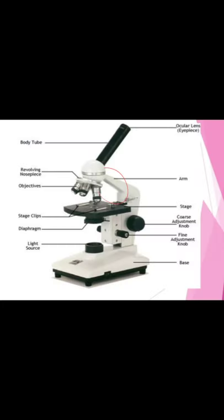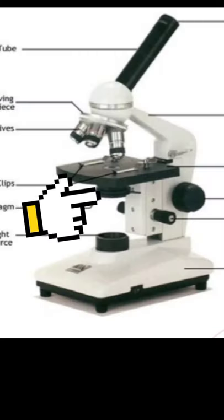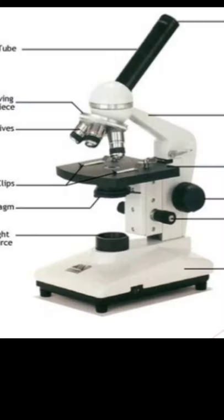The microscope will not be complete if we don't have the arm or neck, which supports the upper part of the microscope. Another part is the diaphragm, located on the stage, which adjusts the amount of light passing through. With that, we have the light source — a light or mirror that projects light through the diaphragm.